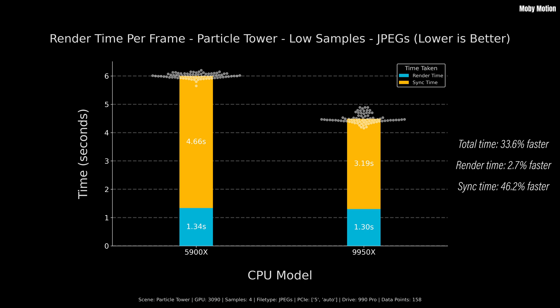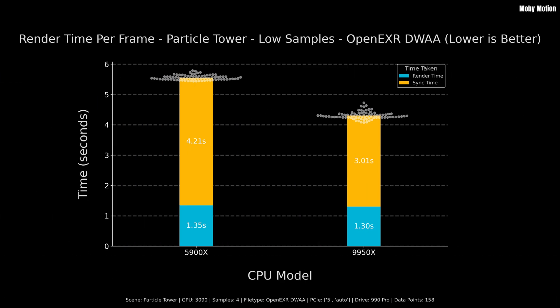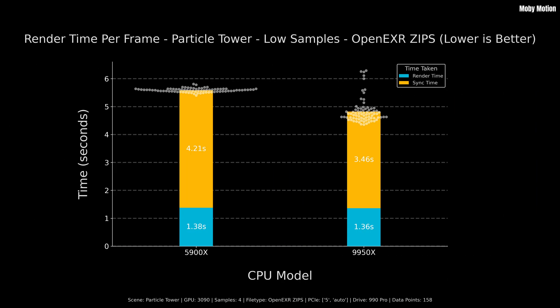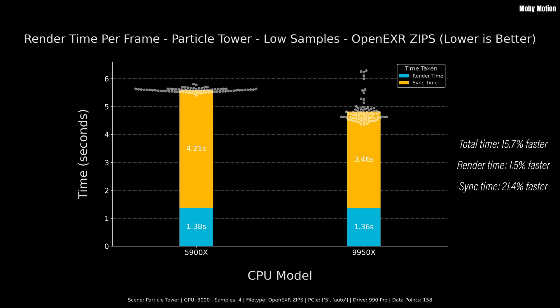To make sure this wasn't just a quirk of rendering to JPEGs, I repeated this for different file formats. For OpenEXR DWAA — lossy but very high quality compression — overall it's 29% faster. The cycles render itself is only 3.4% faster, but sync time is 40.1% faster. Using lossless compression, the total time is 15.7% faster. The cycles render time is only 1.5% faster, but sync time is 21.4% faster.